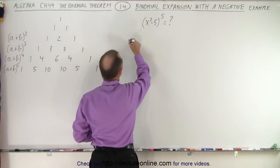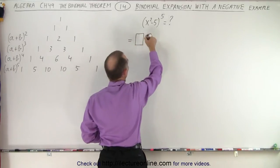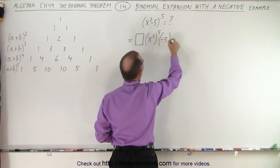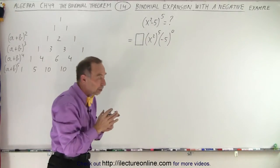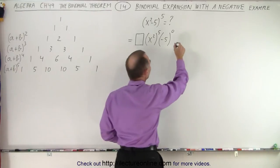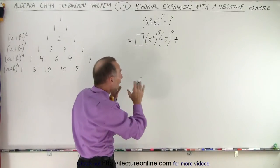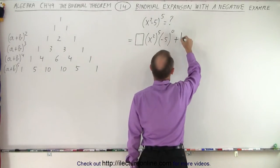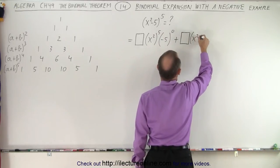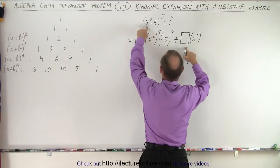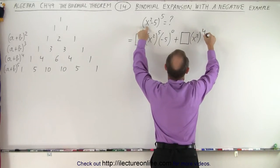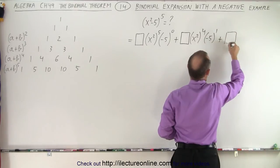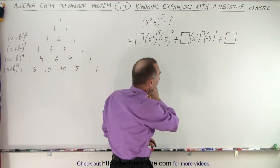So this is equal to the first coefficient times the first term x squared raised to the exponent 5, times the second term negative 5 raised to the zero exponent. I'm working through it in every detail. Now we add to that — the numerical coefficient of the second term: x squared to the fourth power and the second character, minus 5, to the first power.